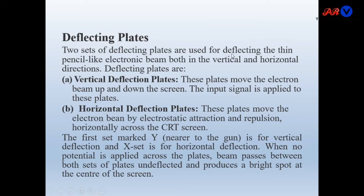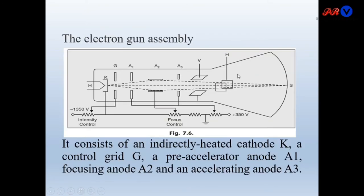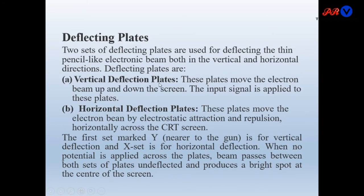Two sets of deflecting plates are used for deflecting the thin pencil-like electron beam both in the vertical and horizontal directions. First, vertical deflection plates: these plates move the electron beam up and down the screen; the input signal is applied to these plates. Horizontal deflection plates move the beam from left to right or right to left. The Y set, nearer to the gun, is for vertical deflection and the X set is for horizontal deflection. You will find two buttons on the CRO: the Y button for vertical deflection and the X button for horizontal deflection.